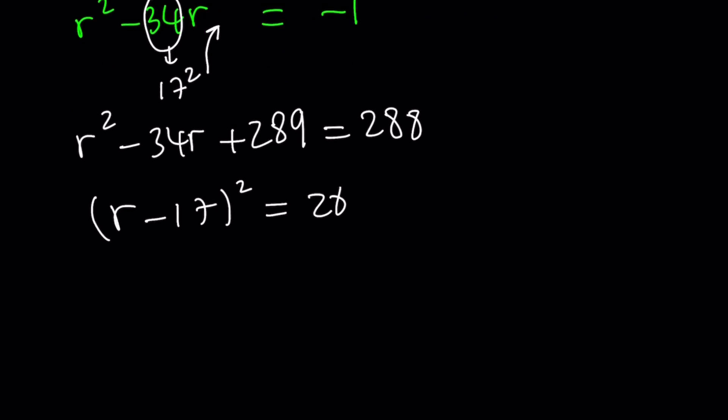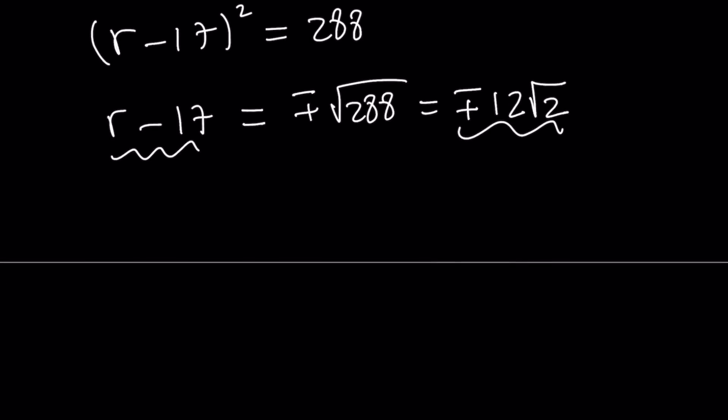So the left hand side becomes r minus 17 squared. And the right hand side is 288. If we take square roots, we're going to get r minus 17 equals plus minus the square root of 288, which can be written as 2 times 144. And then we can go ahead and write this as plus minus 12 root 2.